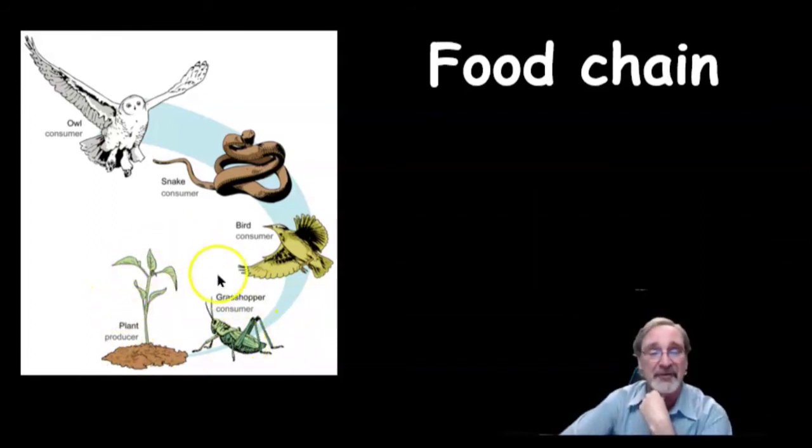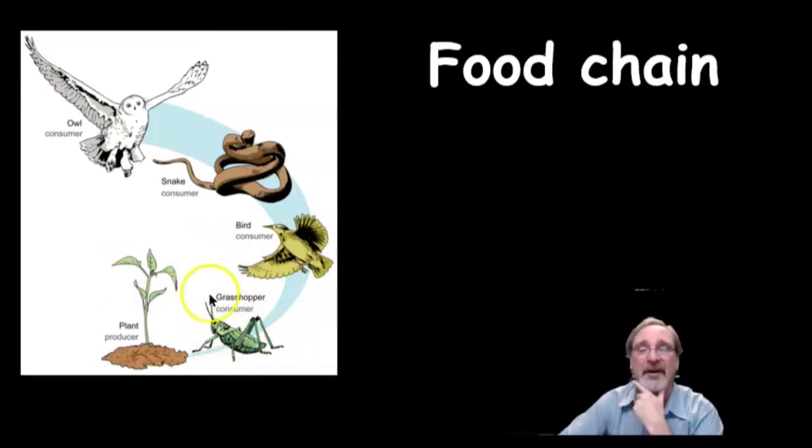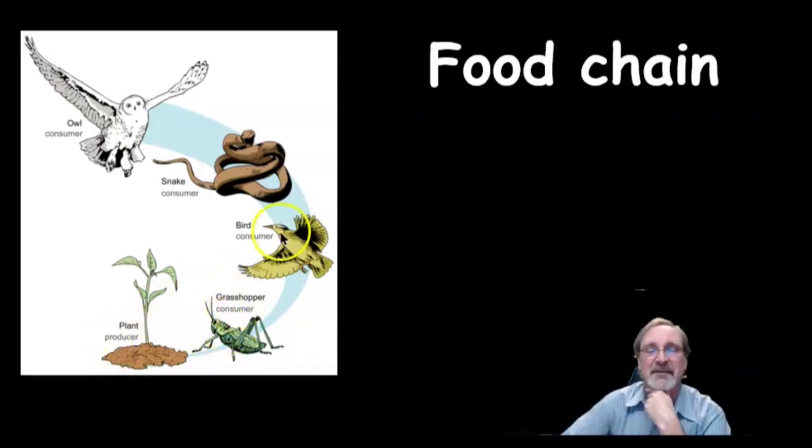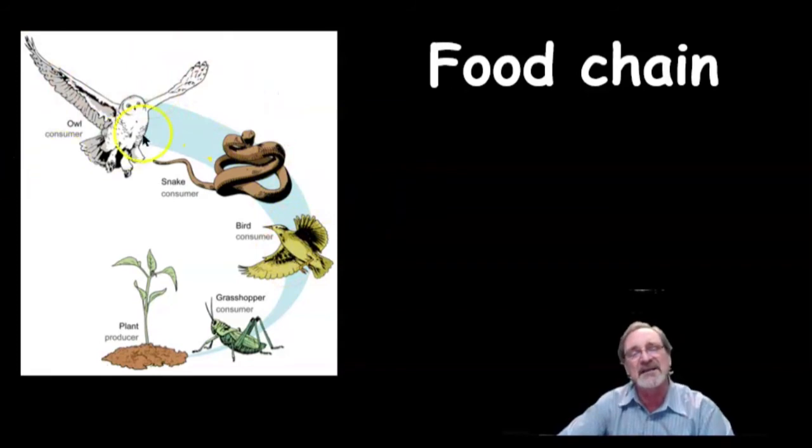An autotroph makes its own food, and then a heterotroph would have to eat something else to get its food. Hetero means other, so it has to eat some other organism. The bird eats the grasshopper, snake eats the bird, and the owl eats the snake. Assuming nothing eats the owl, that would be sometimes called a top predator or an apex predator.